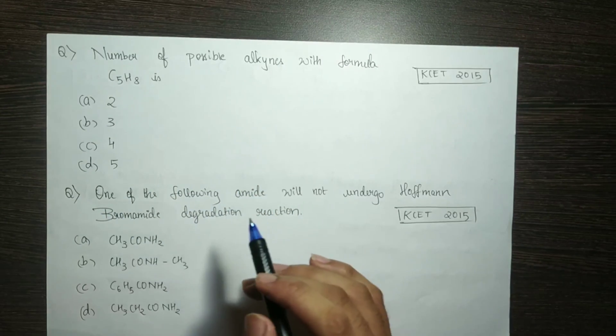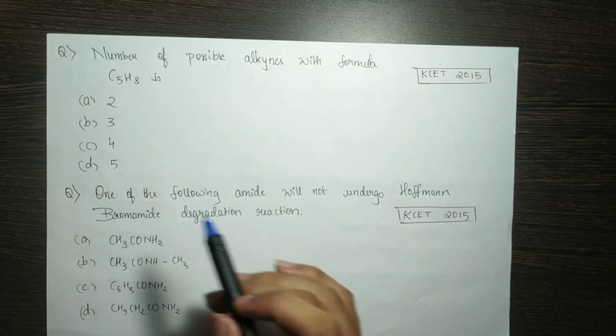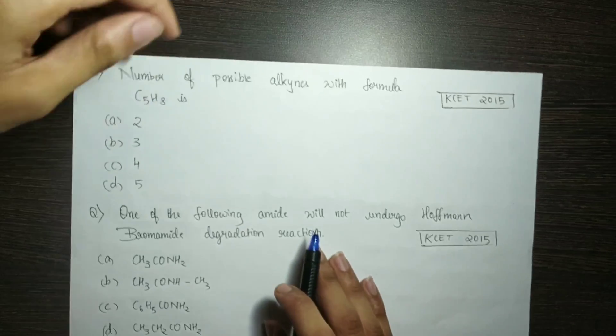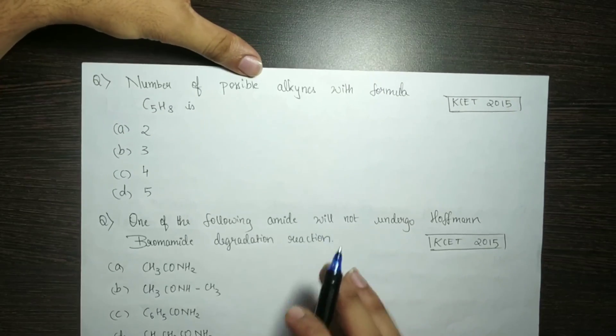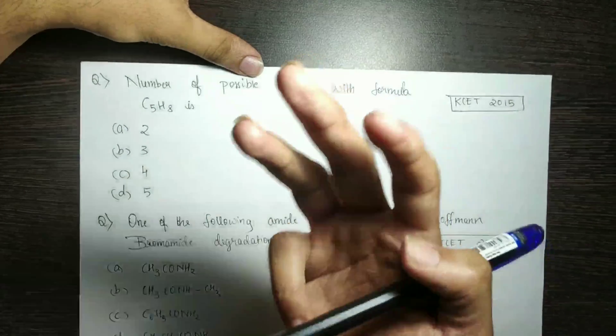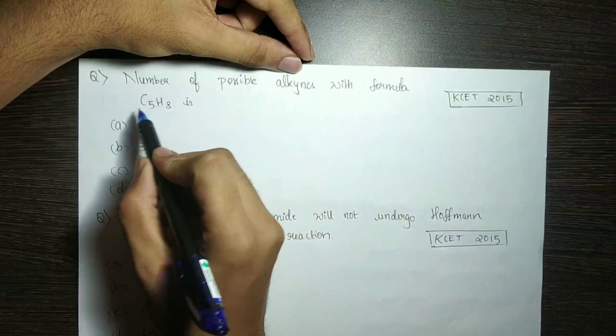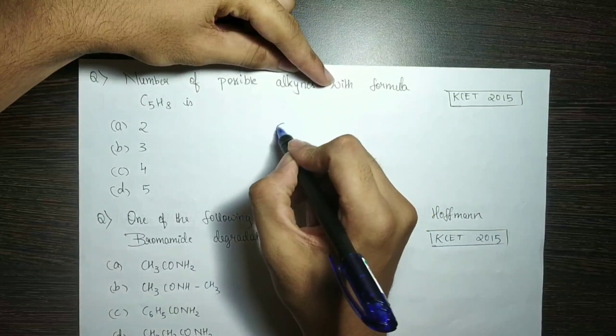The number of possible alkynes with the formula C5H8 is — an alkyne has a triple bond, and C5 means 5 carbons.